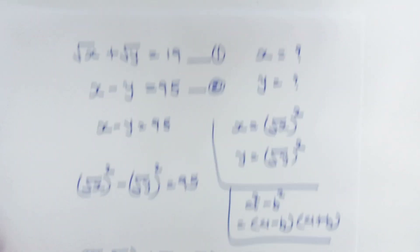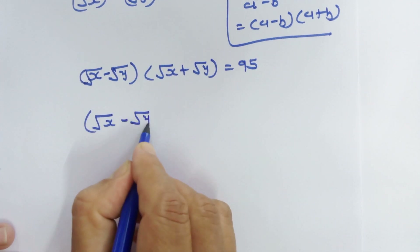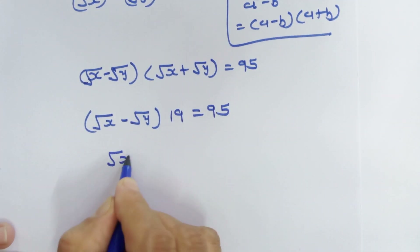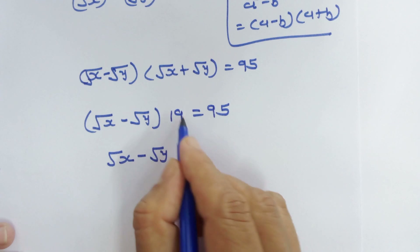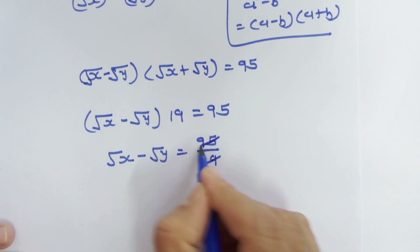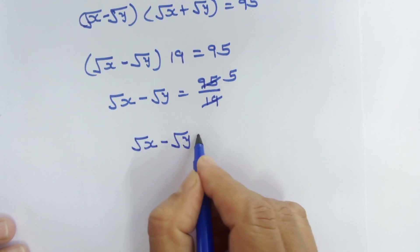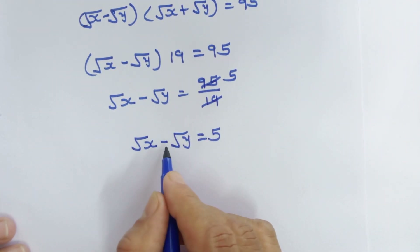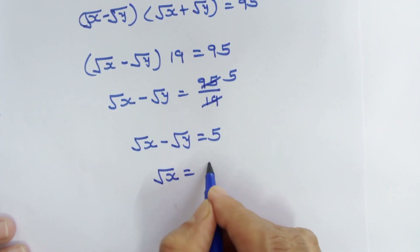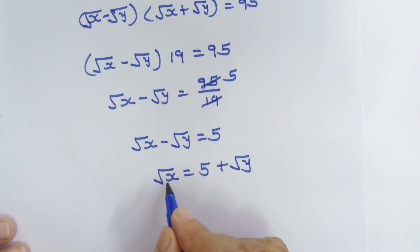Now let's see equation number 1: √x plus √y is equal to 19. So here we can write (√x minus √y) times 19 equals 95. Moving 19 to the right hand side: √x minus √y equals 95 upon 19. Since 19 fives are 95, we get √x minus √y equals 5.